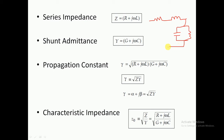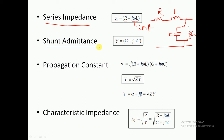Series impedance is denoted Z and shunt admittance is denoted Y. The formula for series impedance is Z = R + jωL, where R is resistance, ω = 2πF, and L is inductance in Henry. For admittance, Y = G + jωC, where G is conductance in Mho, C is capacitance in Farad, and ω = 2πF. Using Z and Y we can establish the relationship between primary and secondary constants.